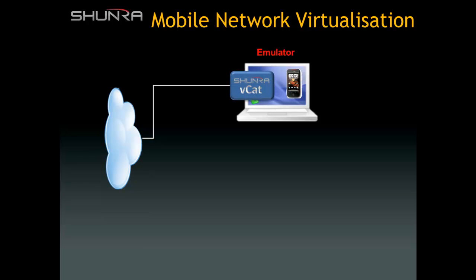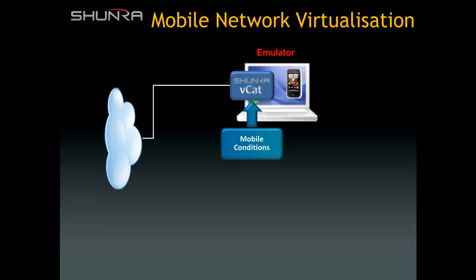When using an emulator or browser, the solution is to install the Shunra VCAT client on the test workstation. VCAT can then replay all mobile network conditions, including samples from the Shunra Network Capture Global Database or recordings captured using the Shunra Network Capture Express app running on mobile devices. The VCAT network emulation encapsulates all aspects of mobile connectivity, including latency, packet loss, jitter, and bandwidth, optionally replaying dynamic recordings.